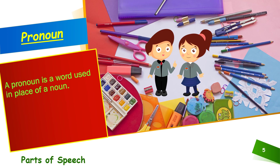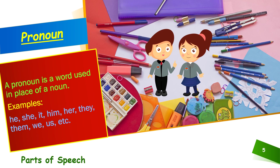For example, here in this picture, I want to use her name. What can I use for her? I can use the word 'she'. She is a pronoun. Let us have a few more examples now: he, she, it — we use 'it' for animals and things; him for boys; her for girls; they — when both of them are together; them, we, us, etc. There are many more pronouns and we are going to deal with them in my next video.